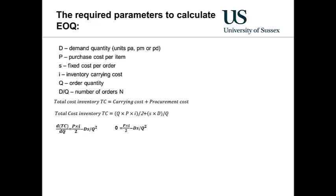Rearranging this equation on the right and solving for Q gives us the economic order quantity model.